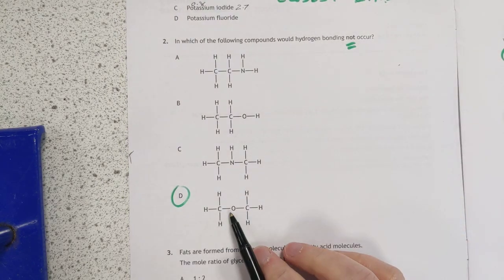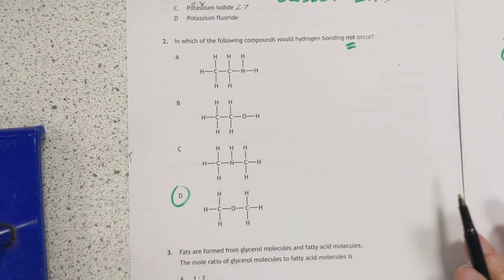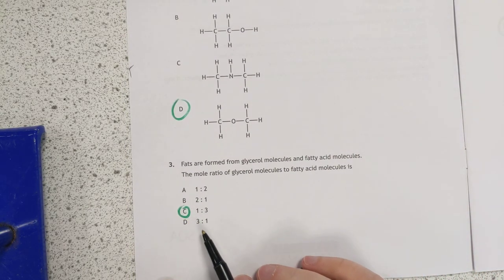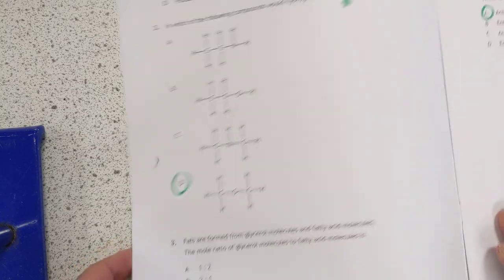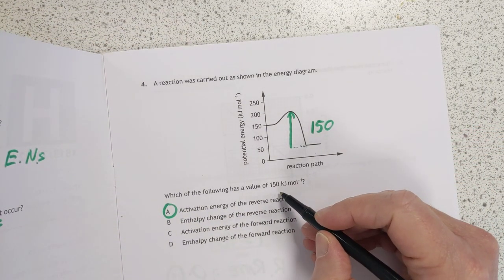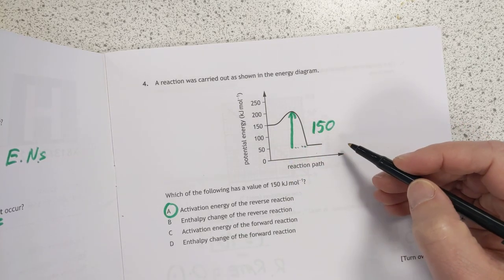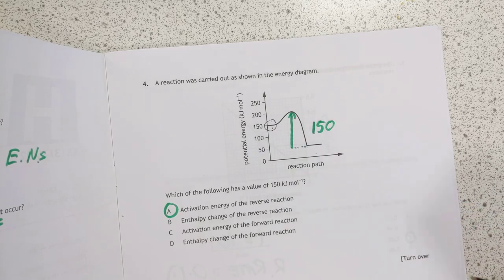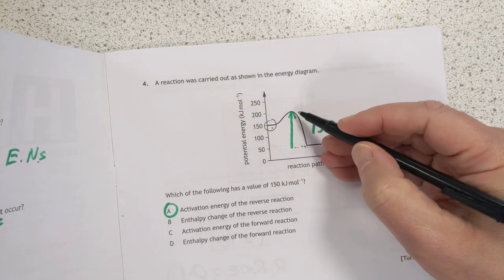Hydrogen bonding not occur, it's going to be this one, because there's oxygen not directly attached to a hydrogen in it. Number three, the simple ratio, it's one glycerol to three fatty acids. Which of the following is a value of 150? The only number on the other match is up to 150, well, it's two actually, the enthalpy of the reactants, but that's none of the answers. So it's the activation energy for the reverse reaction.